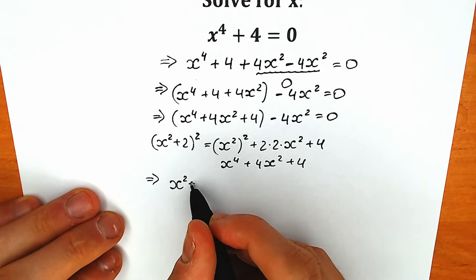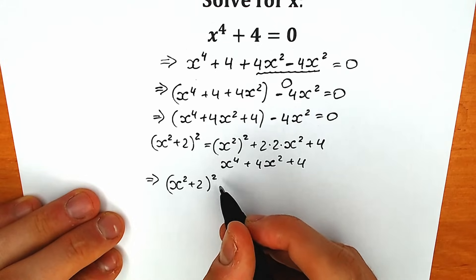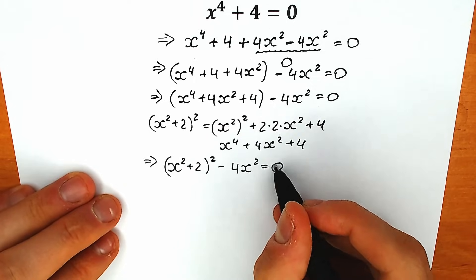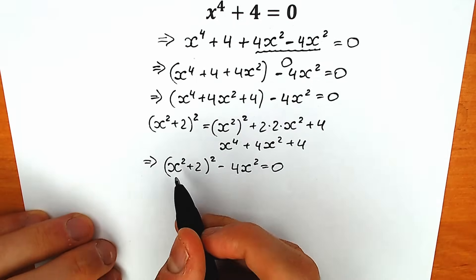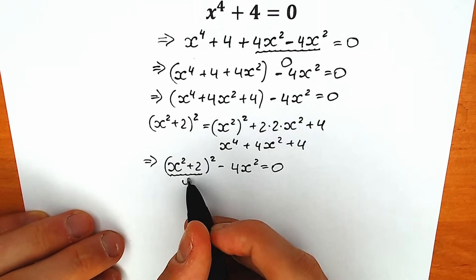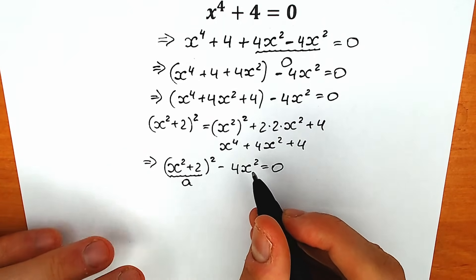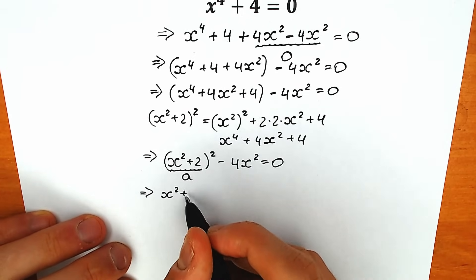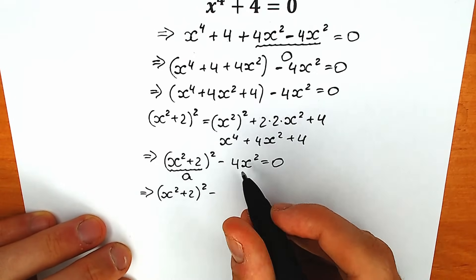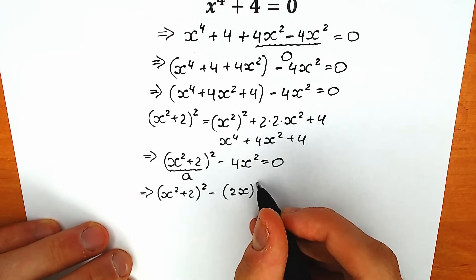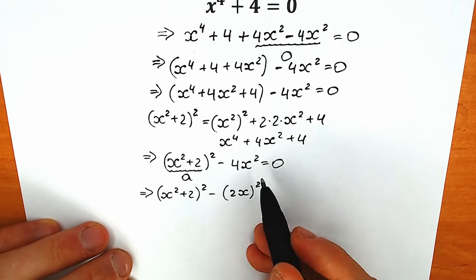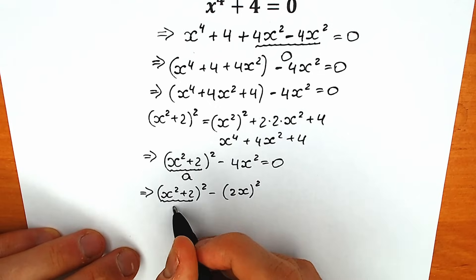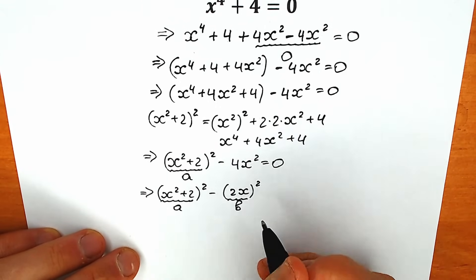As a result we have x squared plus 2, all squared, minus 4x squared, equal to zero. We can raise that 4x squared inside parentheses and write it as 2x to the second power. This is the tricky move: if we call x squared plus 2 our 'a' and 2x our 'b', we now have a squared minus b squared.